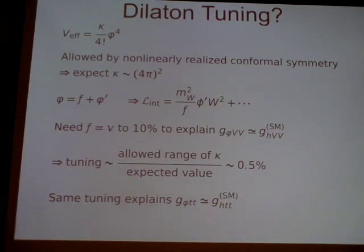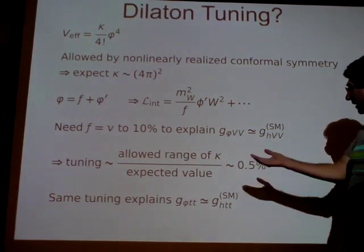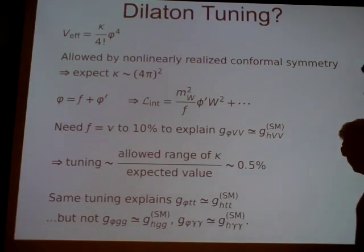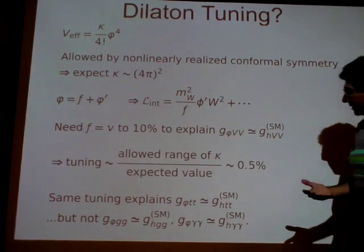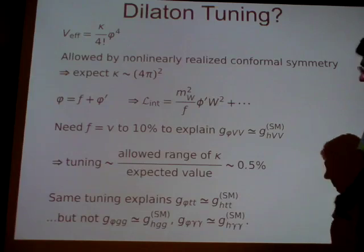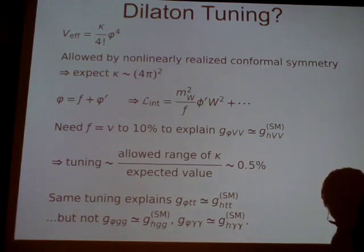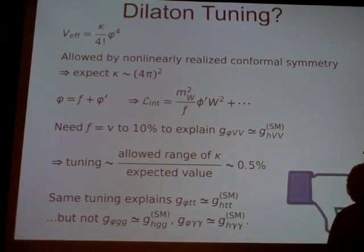Once I've done this tuning, the same tuning actually explains the other couplings. So there's one tuning and I get all the Higgs couplings once I've done it — except for the loop-induced couplings, because there's an additional scale dependence coming from loops. The loop scale dependence doesn't have to match the tree-level one, and this is much more model-dependent. It's anyway a pretty small change compared to this tuning, which is much more severe.